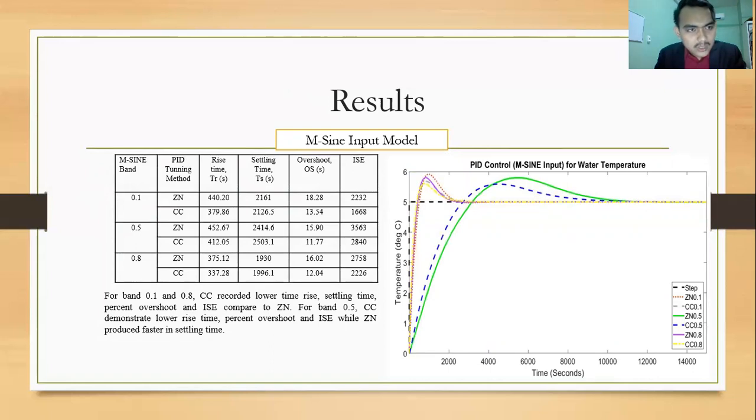So from band 0.1 and 0.8, Cohen-Coon recorded lower time rise, settling time, percent overshoot and ISE compared to Ziegler-Nichols.